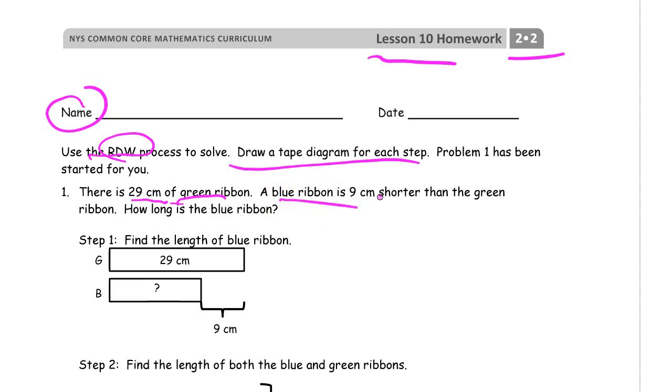It starts off with there is 29 centimeters of green ribbon. A blue ribbon is 9 centimeters shorter than the green ribbon. How long is the blue ribbon? So here's the picture. A lot of times you try and solve all that in your head without drawing a picture first, and you can get crossed up.